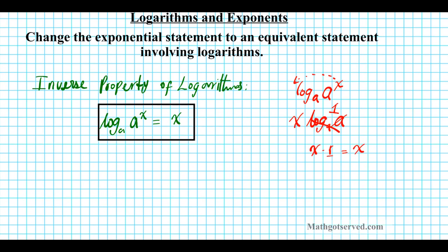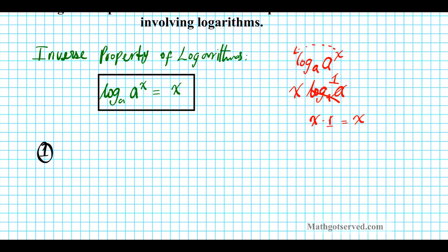Let's take a look at some problems. Number one: what if we are to express the following exponential statement — 125 equals 5 to the third — as a statement involving logarithms? In order to do this, you want to look at the base of the exponential term. The base is 5, so since the base of this exponent is 5, we are going to take log base 5 of both sides.